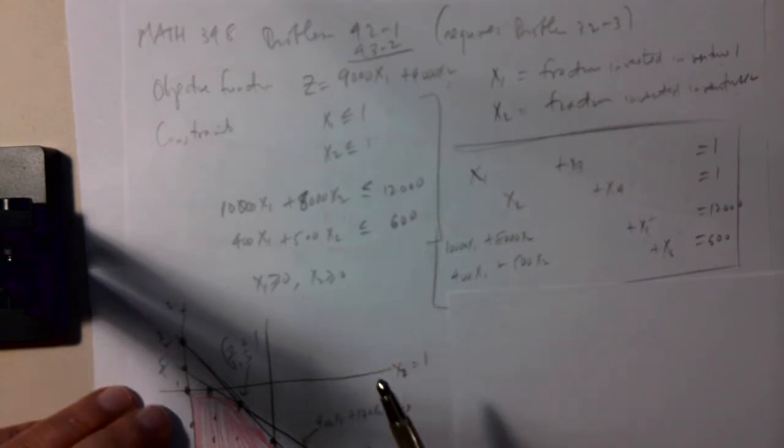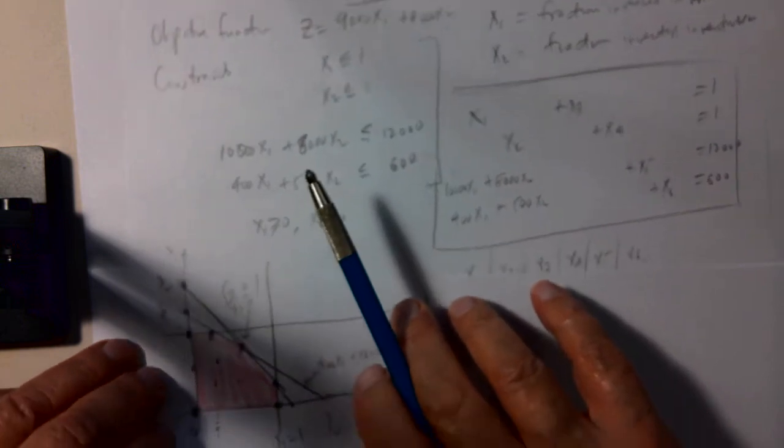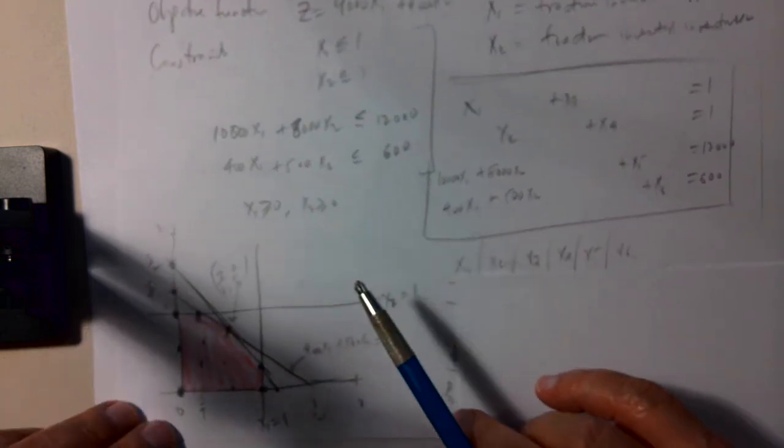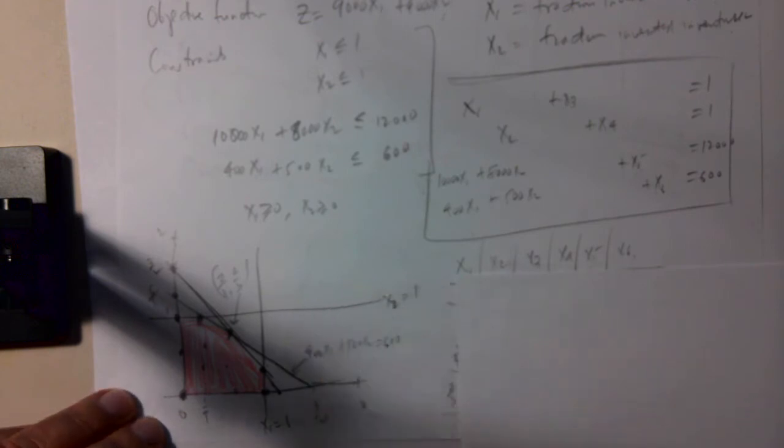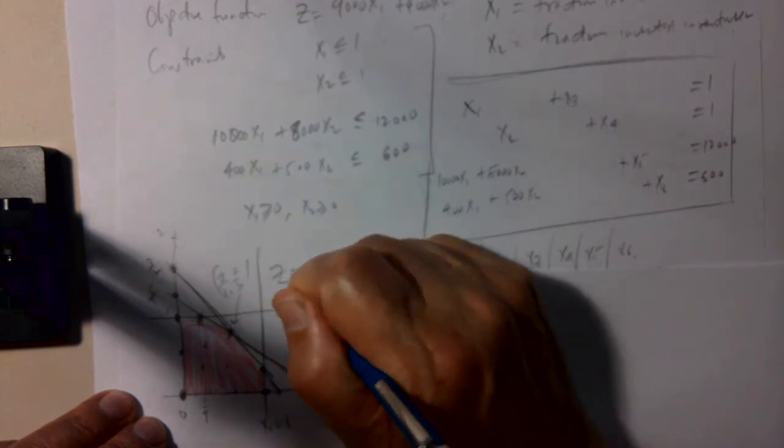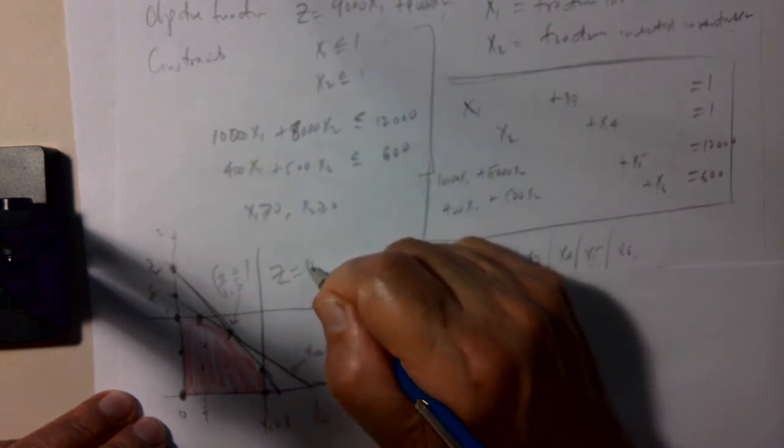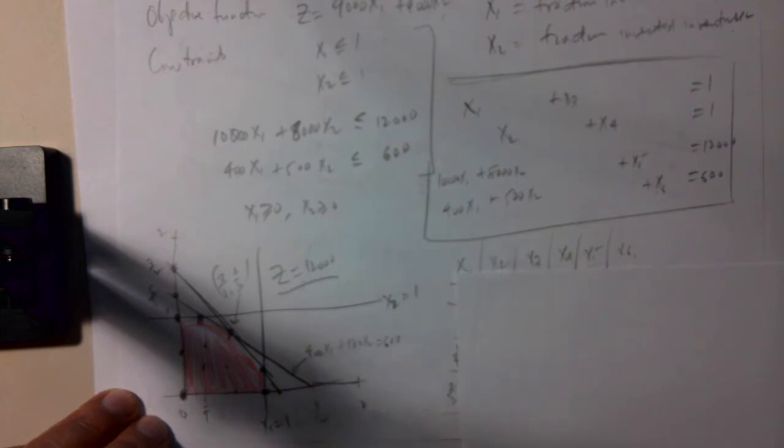And X1 and X2, the usual non-negativity conditions. So we solved this graphically, because it's only a problem in two variables. And it turns out, when you solve it graphically, the maximum occurs when X1 and X2 are both equal to two-thirds. They're at this corner point feasible solution. And the maximum value of Z you get is 12,000. So it's nice to know the solution, that's it.